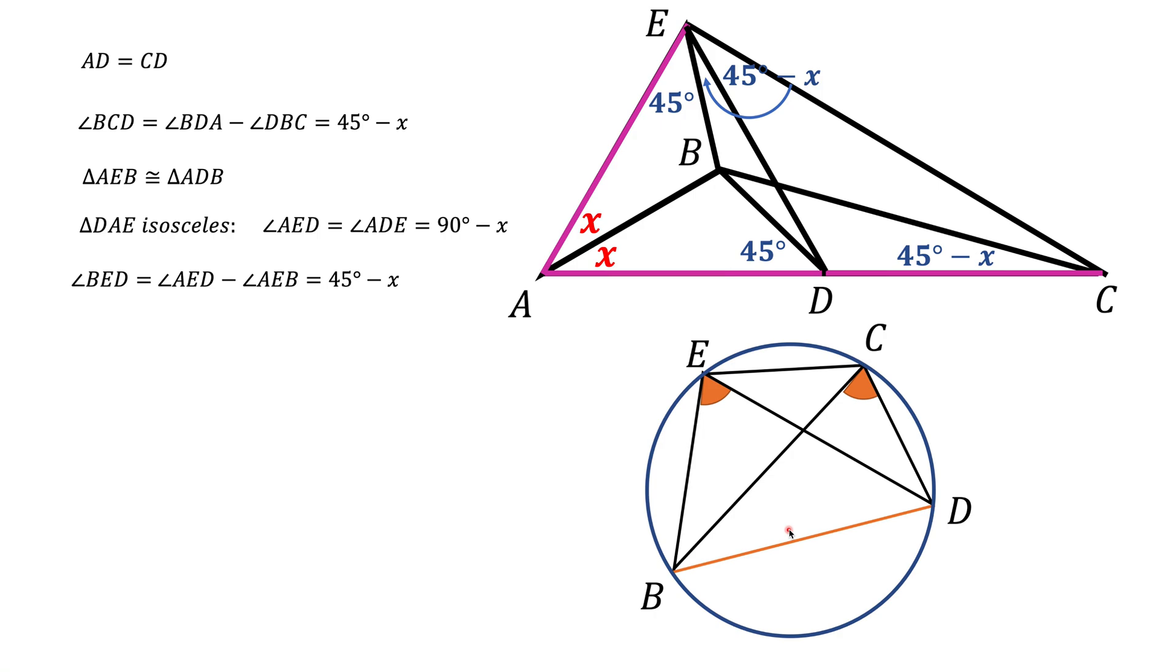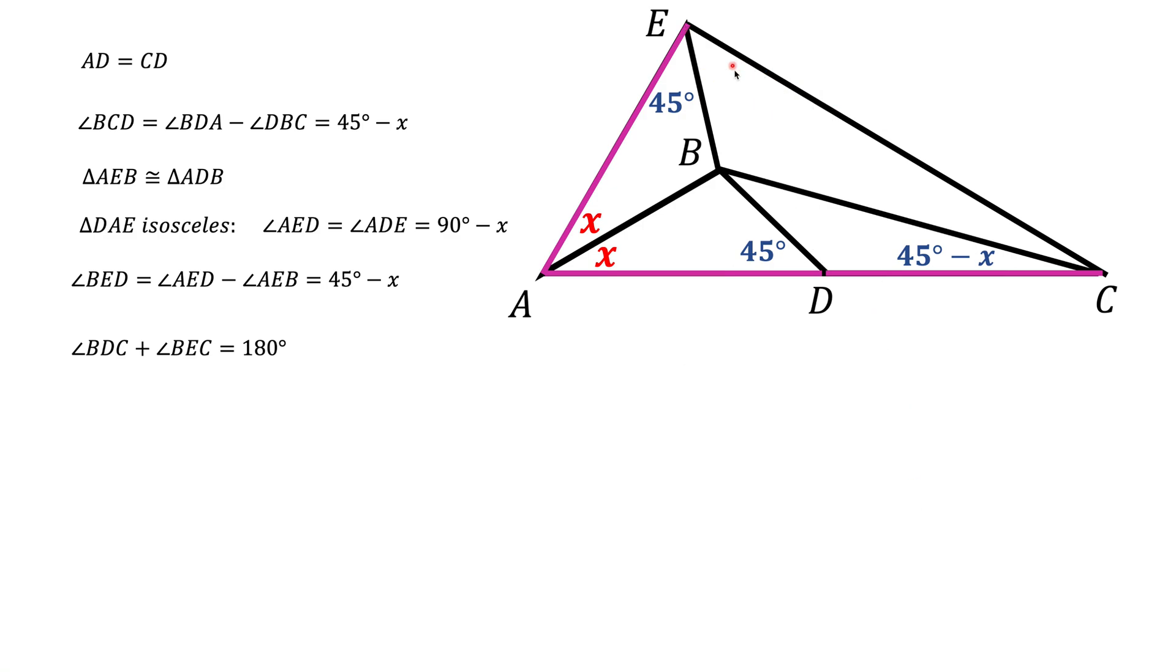And that quadrilateral has a special property. The property is that the sum of opposite angles should be 180 degrees. So for example, angle E, big angle E, and big angle D together give us 180 degrees. Now if you look at our triangle here, this angle D and angle E should give us 180 degrees. Angle D is 180 minus this 45, it's 135 degrees, and therefore this angle E here should be 45 degrees.